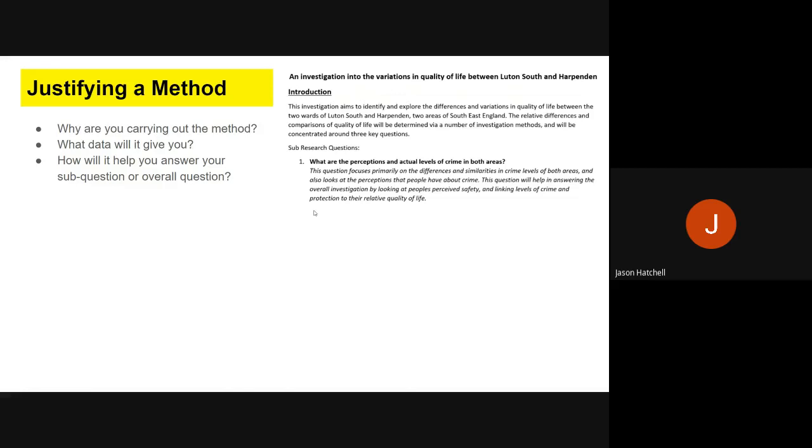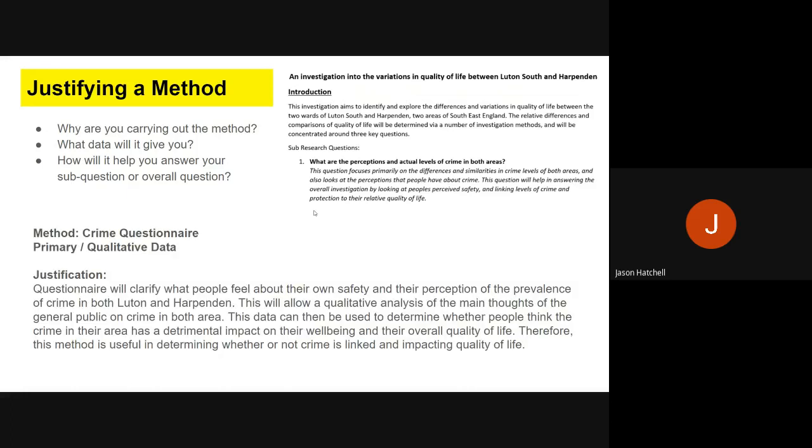Let's go back to my favorite investigation, looking at quality of life in Luton South and Harpenden. We're talking about my crime questionnaire, which is primary data and qualitative. Here's my justification paragraph for this method. It will clarify what people feel about their safety and their perception of crime in both Luton and Harpenden. It tells me the main thoughts of the general public about crime. That data can determine whether people think crime is having an impact on their life and whether it's good or bad. Therefore, this method can be linked to whether crime impacts quality of life overall. That's a clear justification for why I'm doing crime surveys and how it helps answer my overall investigation.